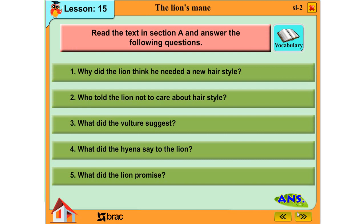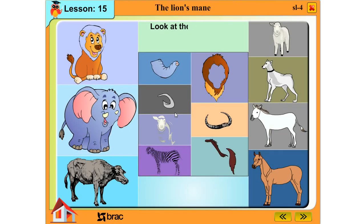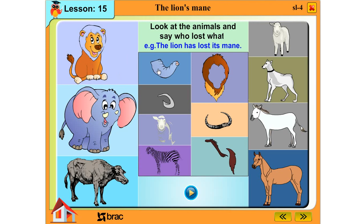Read the text in section A and answer the following question: Look at the animals and say who lost what. Example: The lion has lost its mane. Drag the missing parts to the animals.